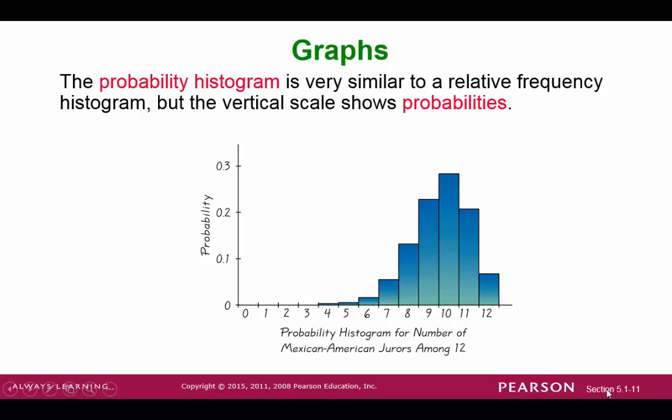Here's an example of a probability histogram where we're able to look at a probability distribution from a graphical point of view. If you notice the y-axis, the vertical scale, it shows probabilities. So this is similar to our histogram, except instead of looking at the counts or the frequencies, we're looking at the probabilities.